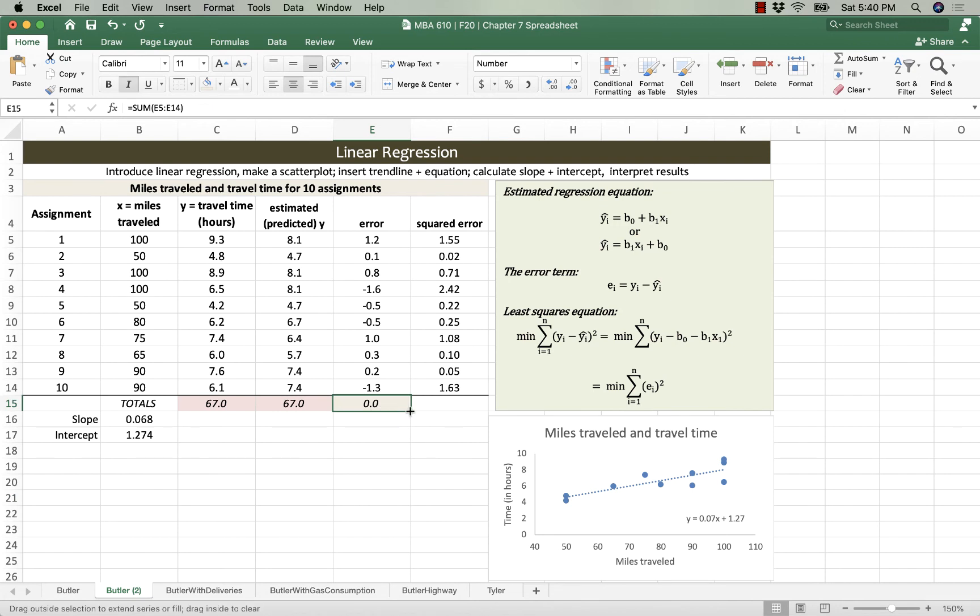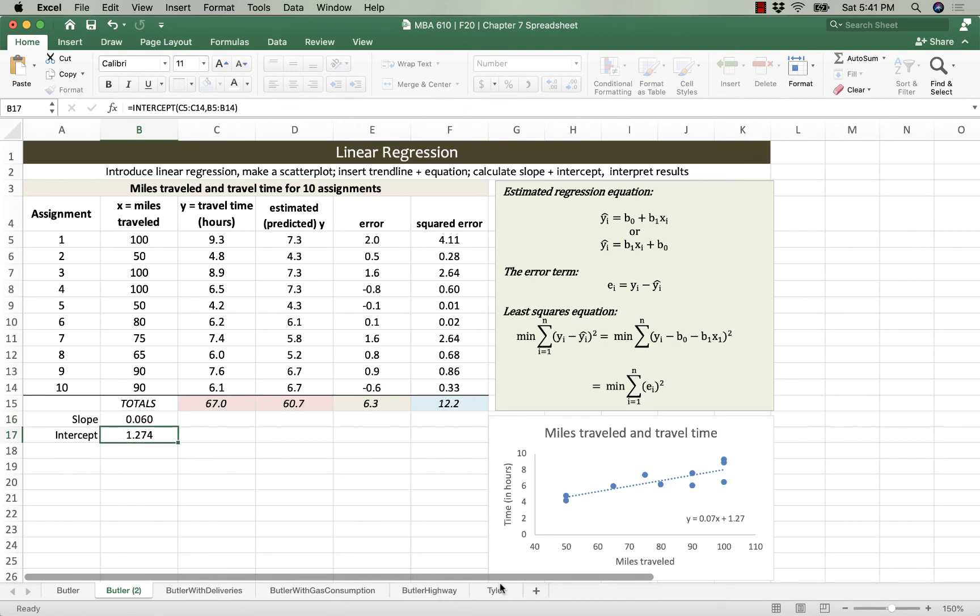The third truism is that this squared error that we're getting at a value of 8.0 is as low as it can possibly be for that data. If we change either of the coefficients, the slope or the intercept, we are going to raise the squared error. We can't get a better slope. So if we were to change this slope to 0.06 instead of 0.068, we're going to get a larger squared error.